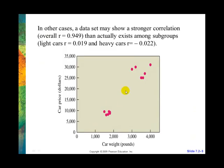Here we have a fake study of weights of cars and prices of cars. We have our heavy cars and our light cars, and when we graph them together, we find that there is a very high correlation — .949. Very high positive relationship. However, if we were to break them out, we find out there's no correlation in either group. The light cars have a .019 correlation, and the heavy cars have a negative .022 correlation. So when we separate the groups apart, we find virtually zero correlation in these groups, but when they were put together, the correlation is very strong.